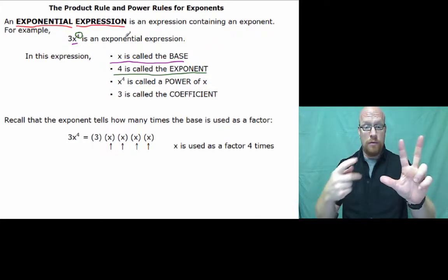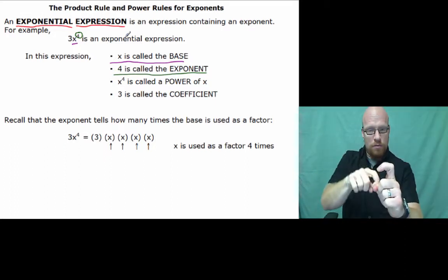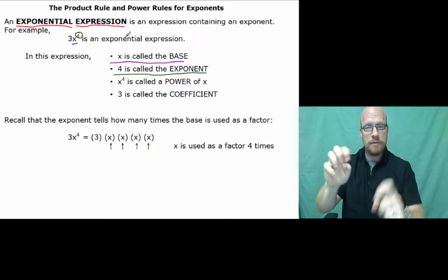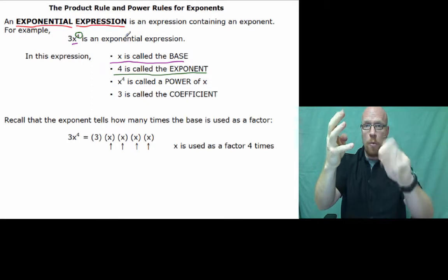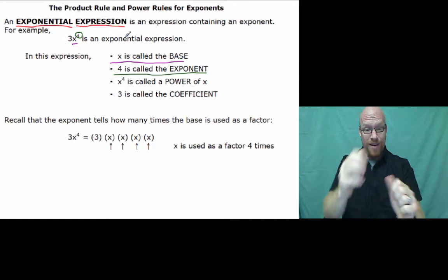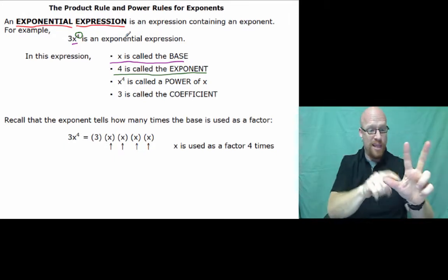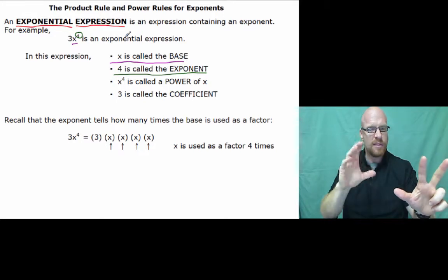Now 3 times X to the 4th power. X in this expression is the base. 4 would be the exponent to the 4th power. It's the power of X. So you see X to the 4th is called the power of X. Now 3 as we've seen before in previous vlogs, 3 is the coefficient.